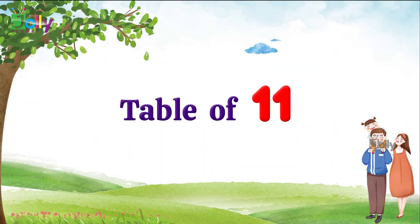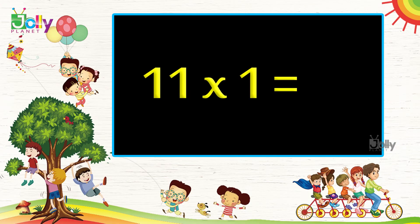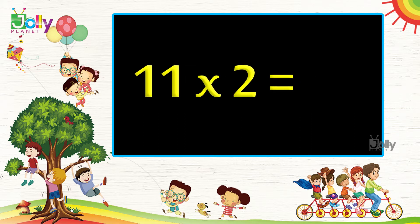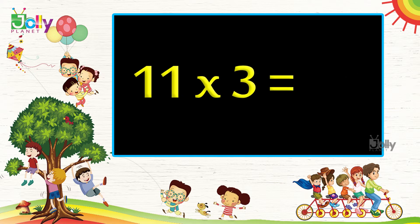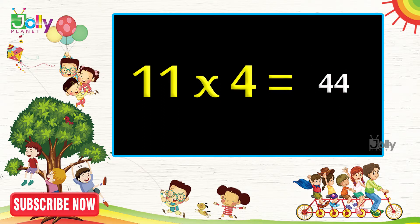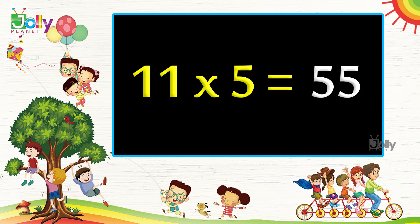Table of eleven. Eleven 1s are 11. Eleven 2s are 22. Eleven 3s are 33. Eleven 4s are 44. Eleven 5s are 55.